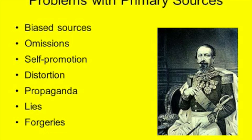In the case of Napoleon the Third, who we see pictured here, he was an especially careful documenter of his own record and left out information that historians might be interested in but he felt would tarnish his image. People sometimes self-promote, they distort, they work in conjunction either with governments or corporations to produce propaganda. Sometimes there are outright lies and forgeries that have survived, so it's important to understand the quality of the primary source that you're using as well as any agenda that the author or creator might have had.